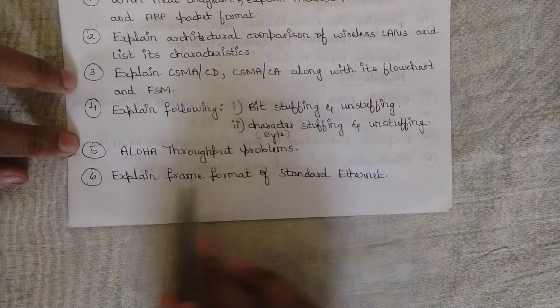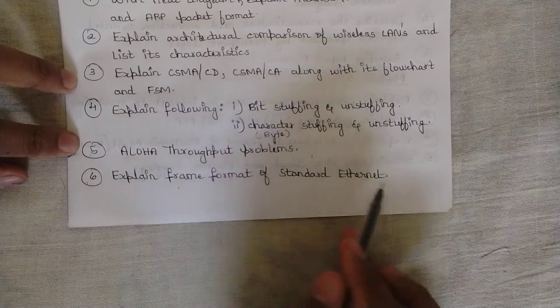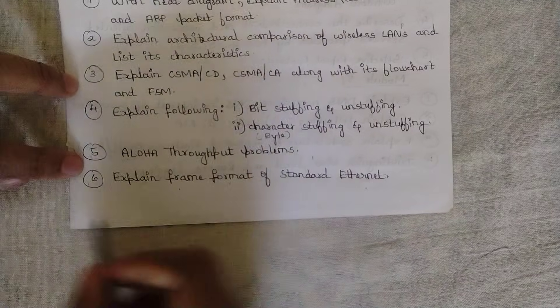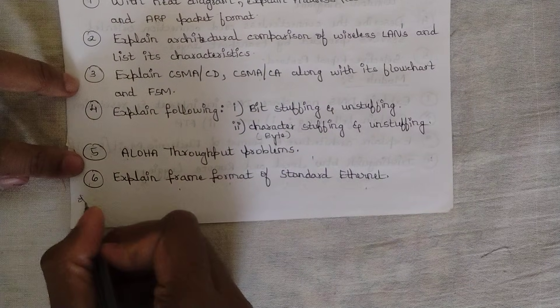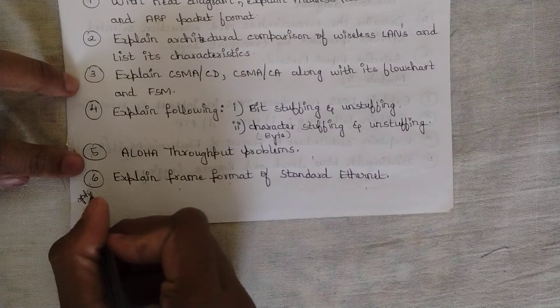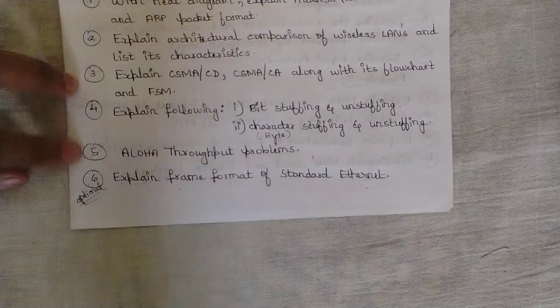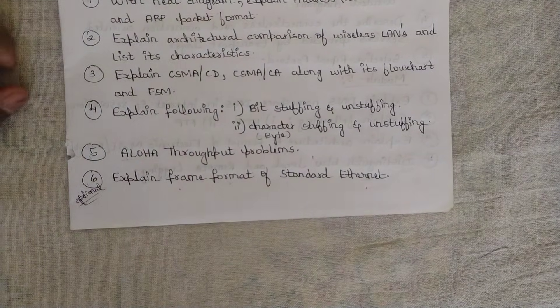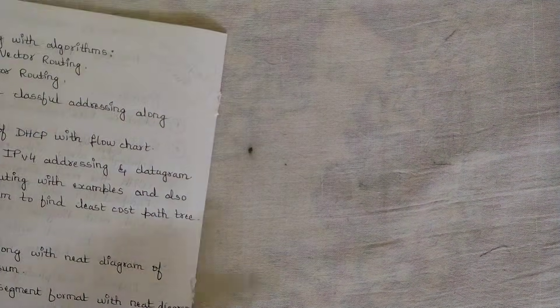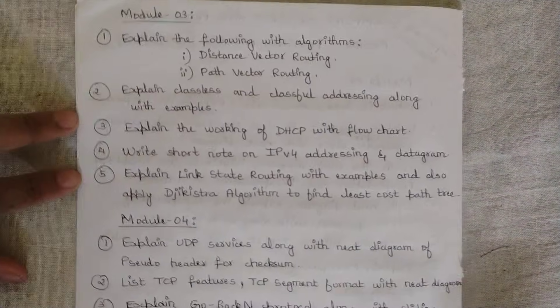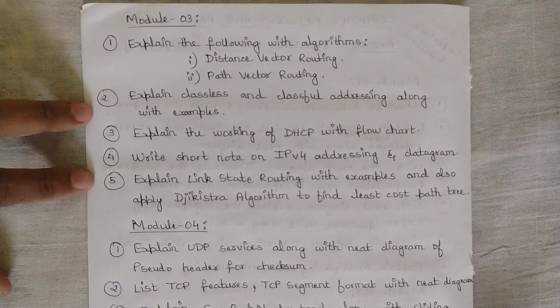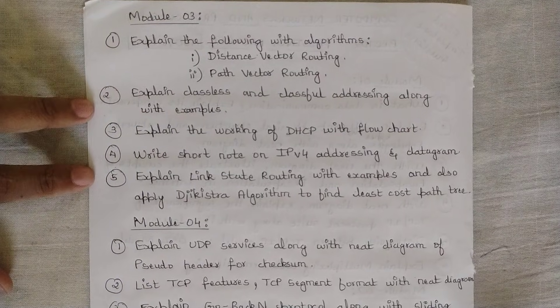The sixth question is: 'Explain the frame format of standard Ethernet.' This is not the most critical, but since it was repeated, I'm mentioning it — treat it as optional if you want to study it. That covers Module 2. Now let's move to Module 3, which has five important questions to cover.